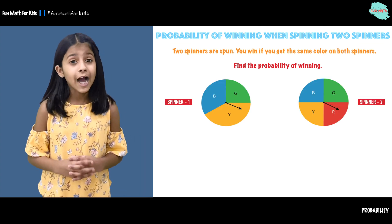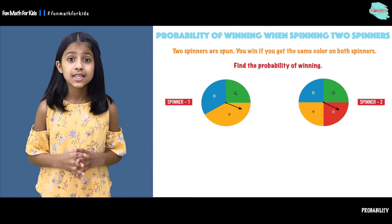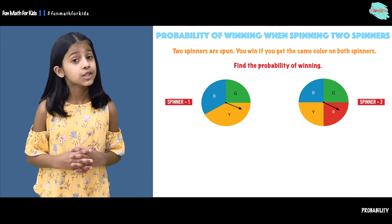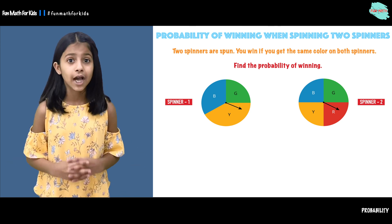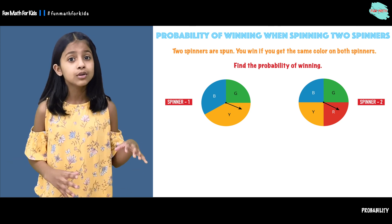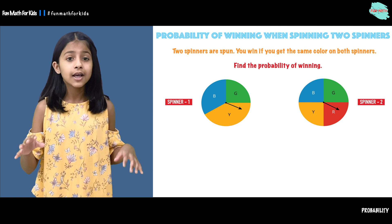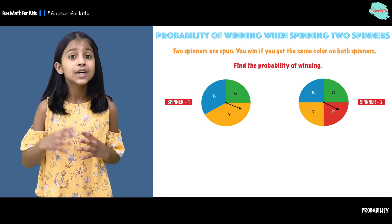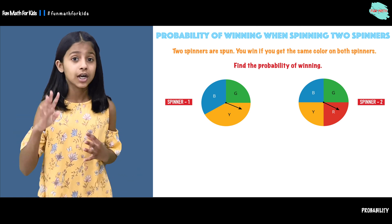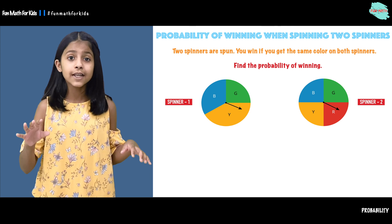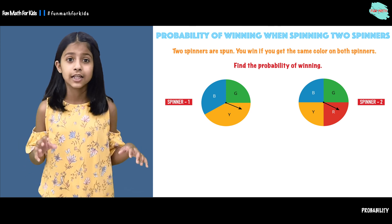Here we have two spinners: spinner one and spinner two. On spinner one we have three colors: blue, green, and yellow. On spinner two we have four colors: blue, green, red, and yellow.